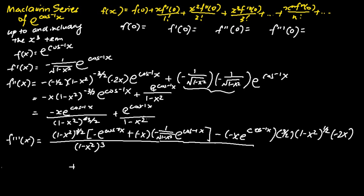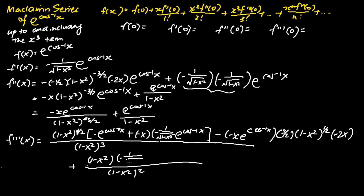Next, we focus on differentiating the second term of f''(x). We apply the quotient rule again: square the denominator and bring it up. We differentiate e to the power cosine inverse x — that is f'(x) — giving the negative of 1 over the square root of 1 minus x squared times e to the power cosine inverse x. Subtracting, we keep e to the power cosine inverse x and differentiate 1 minus x squared, which gives negative 2x.